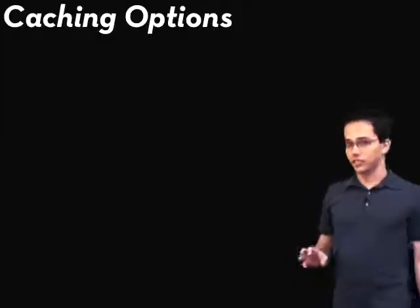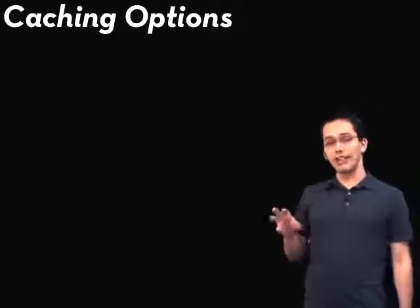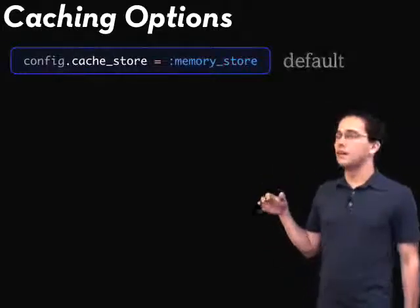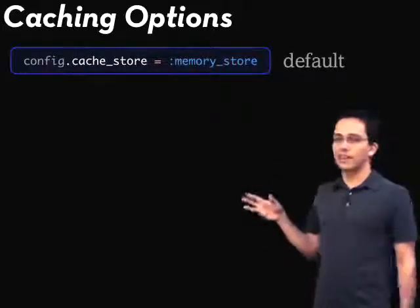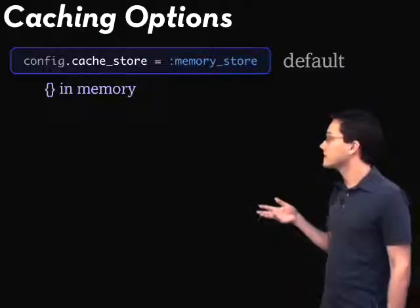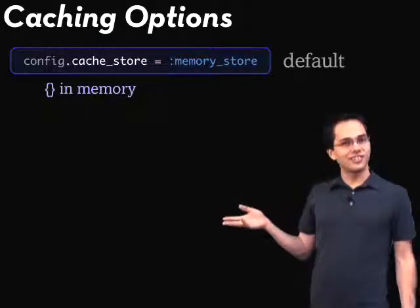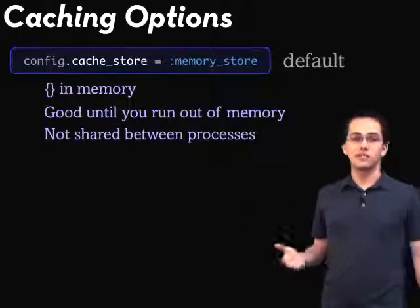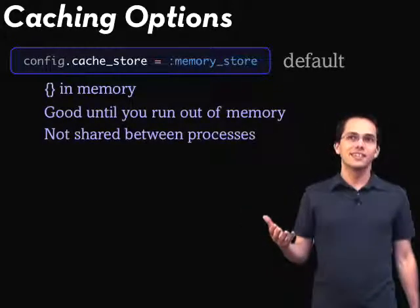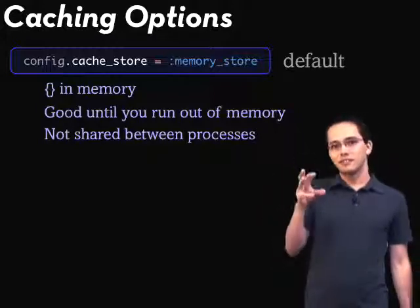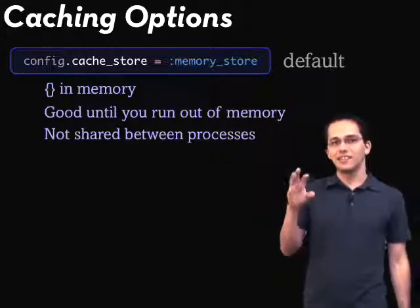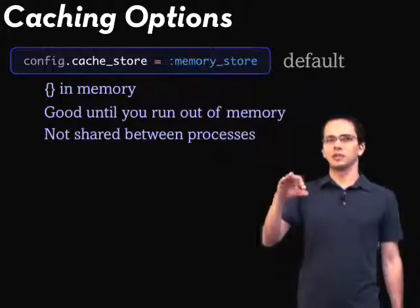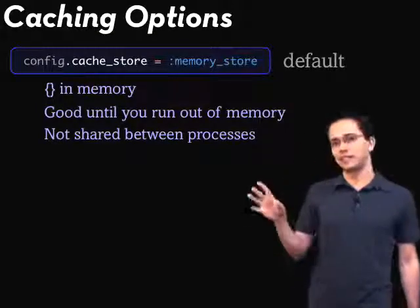The default cache store for both action and fragment caching out of the box is memory store. The way to think about this is it's just sort of like a hash in memory — which is good until you run out of memory. Also, it's not shared between processes. So if you have more than one Rails instance, they're each going to have their own in-memory caches, and you get into trouble with expiration because only one of them is going to expire the item in memory and the other isn't.